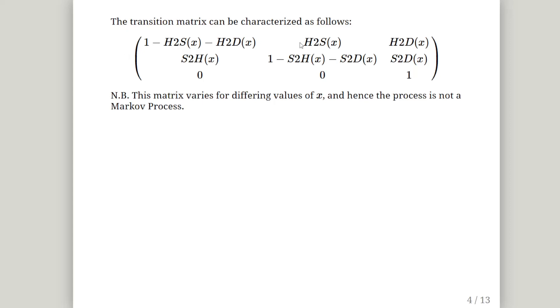Now we're told about the probabilities of going from healthy to sick, which is a function of x. So this is essentially a probability value. Also healthy to dead. So essentially the row probabilities have to add up to one.